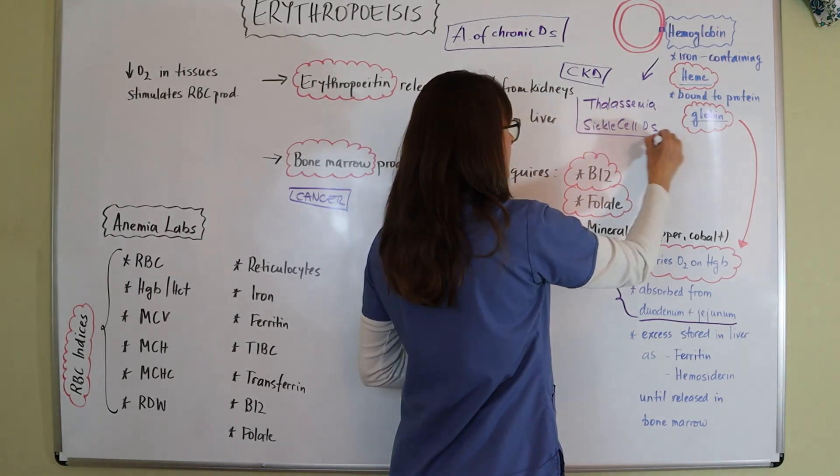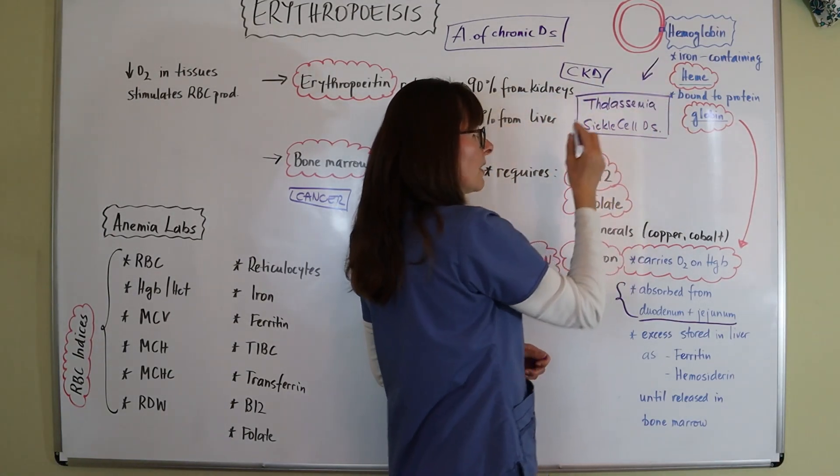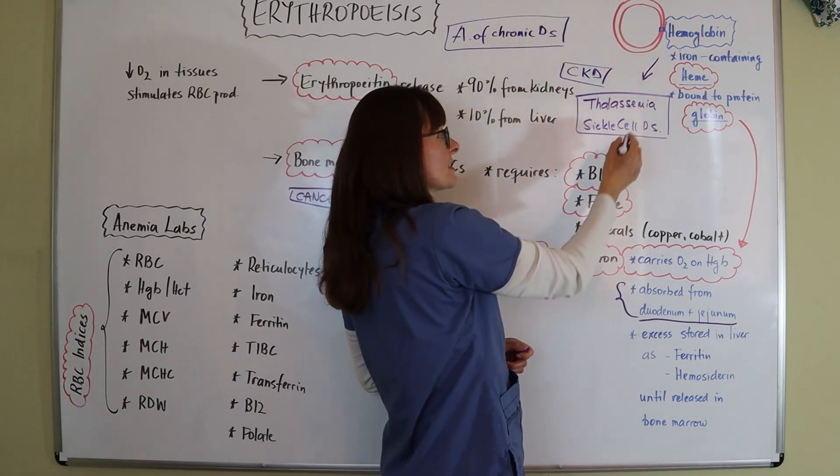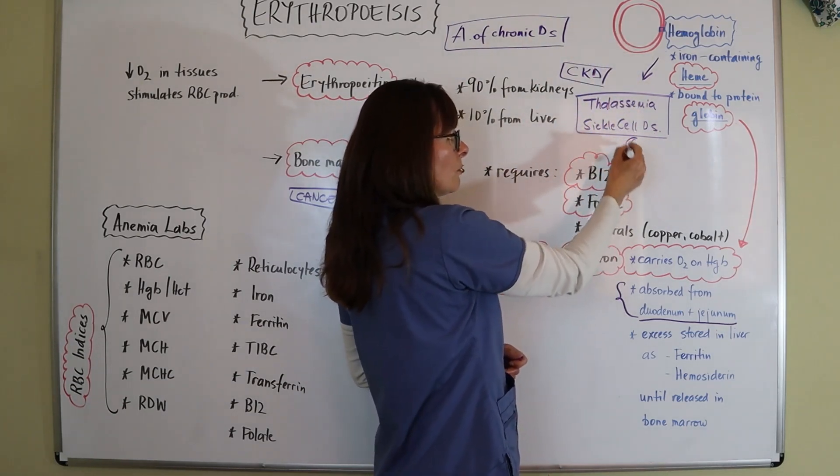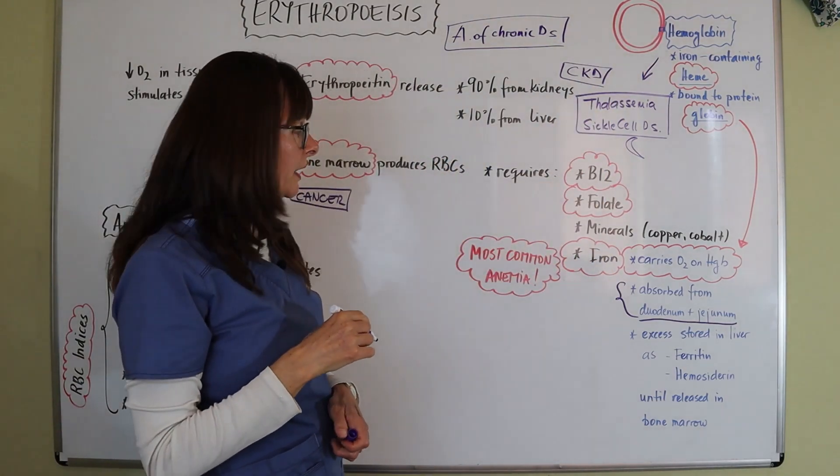Sickle cell disease, per se, there's not necessarily anything wrong with the hemoglobin itself. But the red blood cells themselves are sickle shaped. So they have this kind of a half moon shape rather than this round shape. And then there's a whole lot of problems that can arise there.